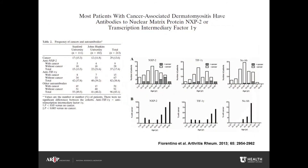In a study, reactivity against either NXP2 or TIF1-Gamma identified 83% of patients with cancer-associated dermatomyositis. In addition to older age and male sex, cancer was associated with antibodies to NXP2 or TIF1-Gamma on multivariate analysis, odds ratio 3.78, 95% confidence interval 1.33 to 10.8. Stratification by sex revealed that NXP2 antibodies were specifically associated with cancer in males, odds ratio 5.78, confidence interval 1.35 to 24.7.